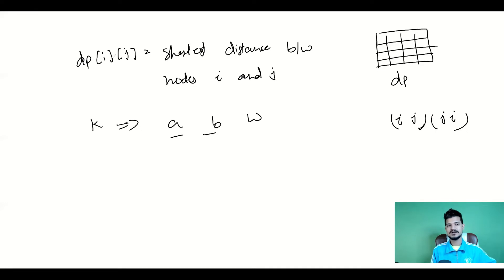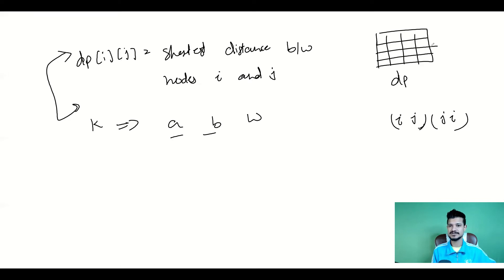To recap: the 2D array of shortest paths for every pair of vertices is given as input. Then you're given k edges of the form a, b, w — we add each edge connecting node a and b with weight w. After adding each edge it's possible the shortest path between some pairs may change, so we recalculate the dp array. Then take the sum of all cells divided by two and print the result, because taking the sum of each cell counts the shortest path between pair i-j twice due to both i-j and j-i cells.